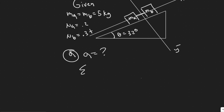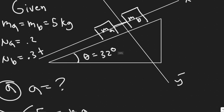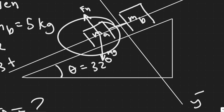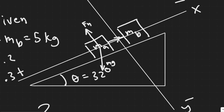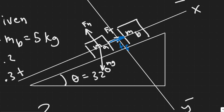Sum of the forces in the x for block A equals MA. Now I'll draw the free body diagram. For this block, we have the force due to gravity acting straight down — this is your MG. We also have the normal force acting straight up, perpendicular to the incline. We have the tension in the cable, which I'll call F of T. And the force of friction is acting in the same direction as tension — opposite to motion — since the block travels down the incline.